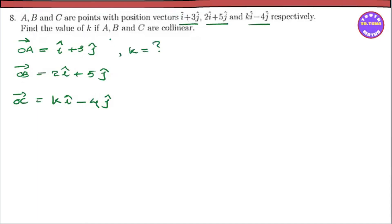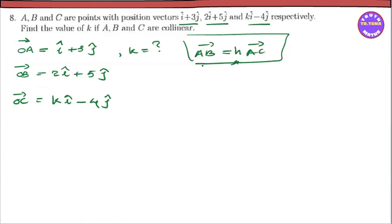We have to find AB vector and AC vector. Since A, B, C are collinear, we use the condition that AB vector equals a constant times AC vector. So AB vector equals H into AC vector.